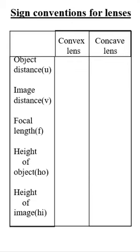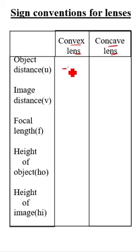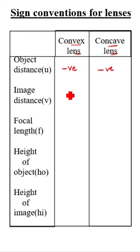Today we will learn about sign conventions for lenses. This is convex lens, concave lens. Object distance U is negative for convex, and here also negative for concave.